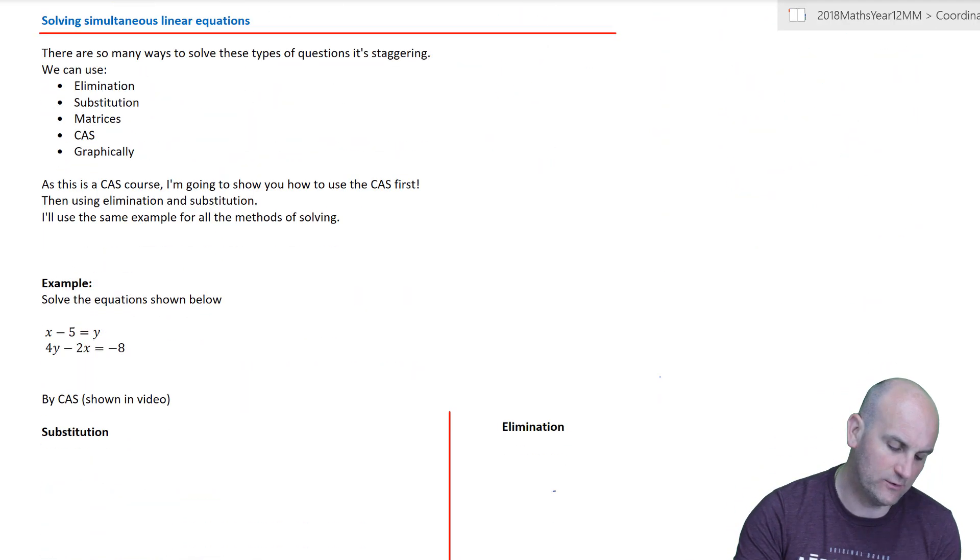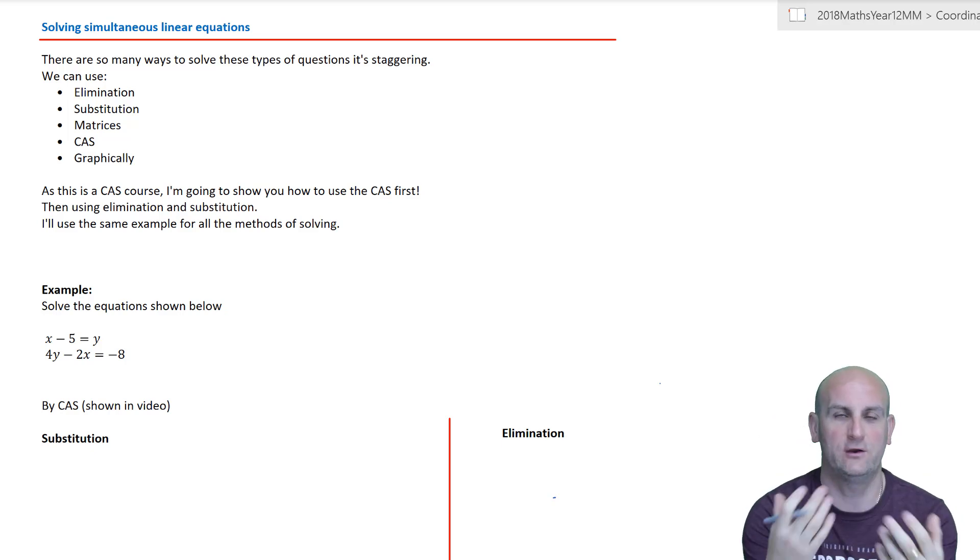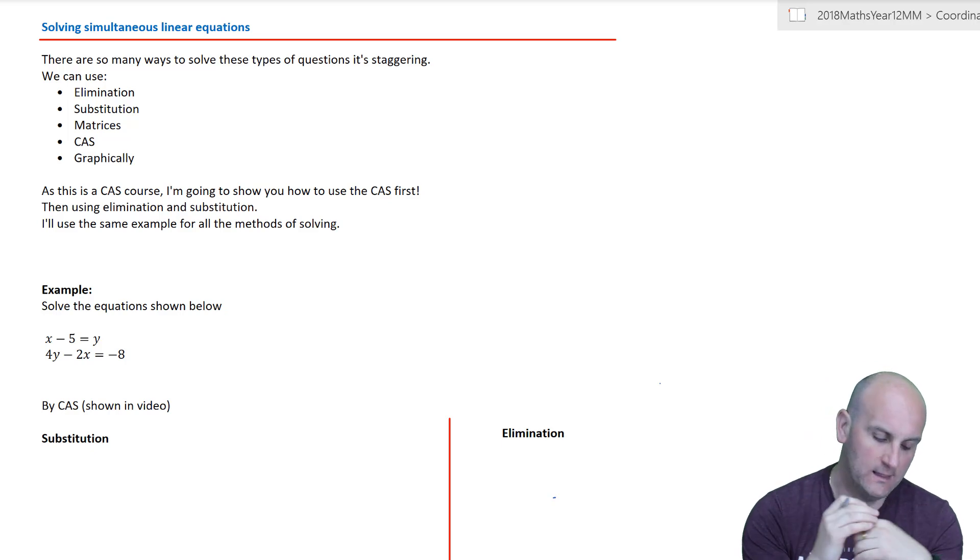You may remember way back in year 10 or earlier, solving simultaneous linear equations. And actually, there are so many ways of doing this. The point of it is, when you're solving simultaneous linear equations, you're looking at two straight lines and where they cross on a graph. Hence, there is a common x value and a common y value to both of those equations at that one point and that one point only. Now, the ways you've been taught will be elimination and substitution. If you were really unlucky, you were taught graphically as well. I've got two more ways to do it: matrices and using your CAS. And because this is a CAS course, we are going to use the CAS.